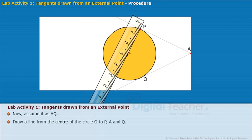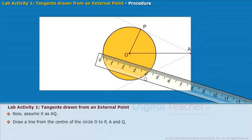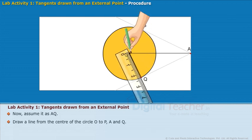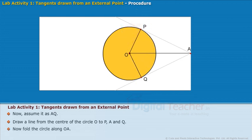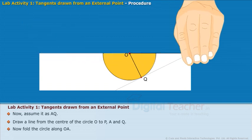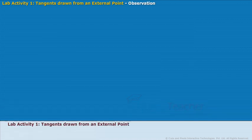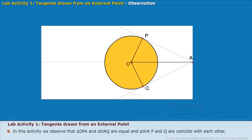Draw a line from the center of the circle O to P, A and Q. Now, fold the circle along OA. Observe the changes. In this activity, we observe that triangle OPA and triangle OAQ are equal, and points P and Q coincide with each other.